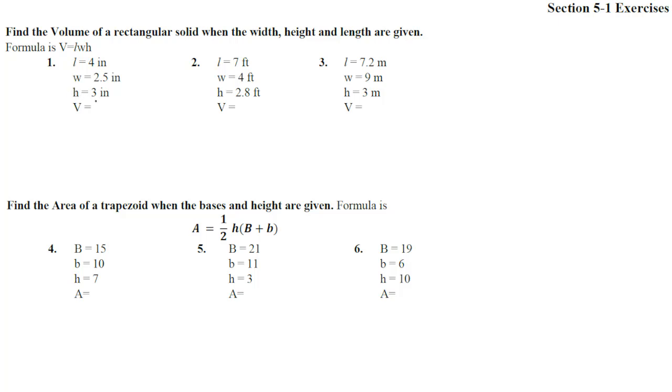LWH is going to be 4 times 2.5 times 3. Let's do that. 2.5 times 4: 4 times 5 is 20, carry the 2. 4 times 2 is 8, plus 2 is 10. So that's 10 times 3, which is 30. Notice it is inches times inches times inches, which is inches to the third power, also known as cubic inches.